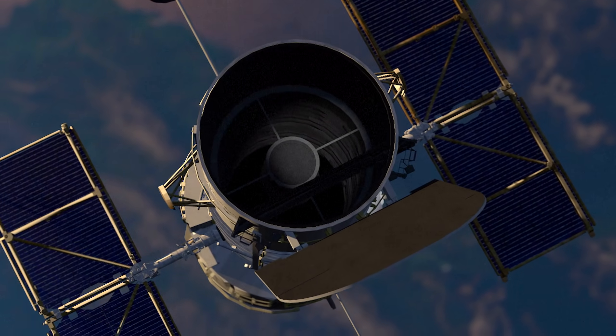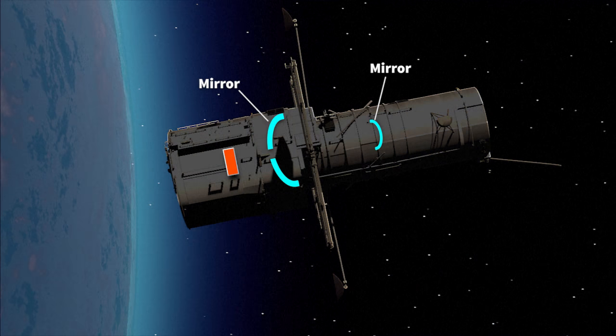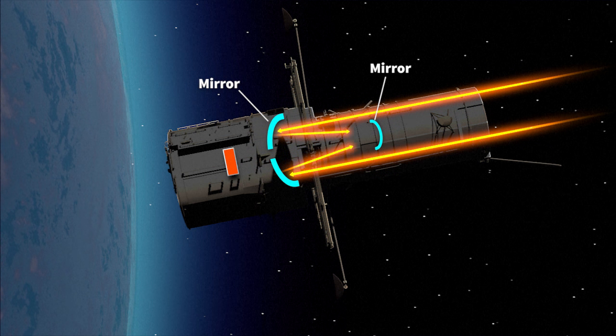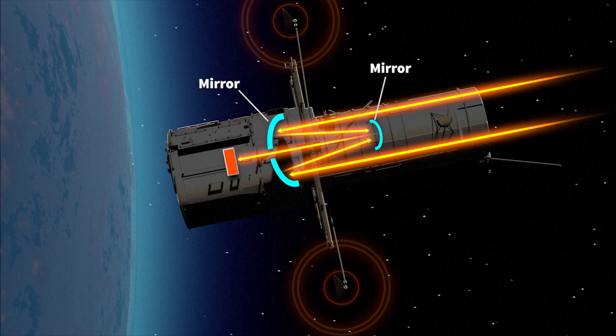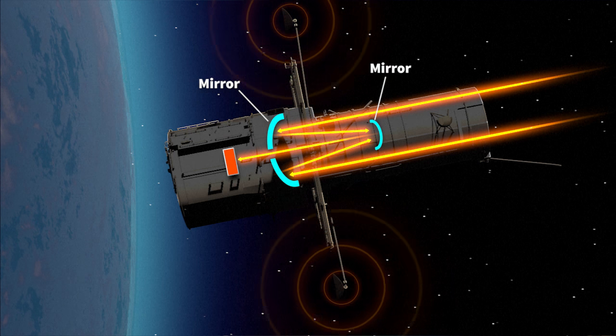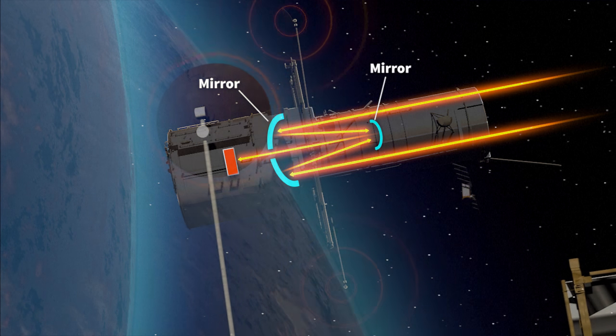Light enters through an aperture door. It then bounces off a primary mirror before encountering a second, smaller mirror. The light is then directed through a hole in the center of the primary mirror where it reaches the telescope's instruments.